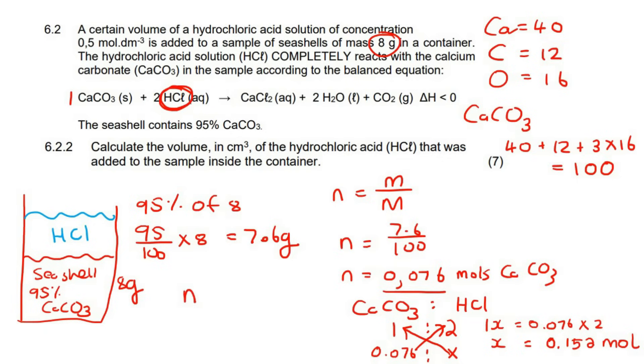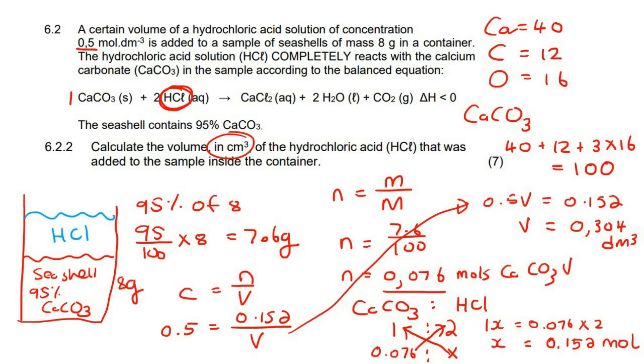Now we can use this formula. C is equal to N over V, because now we have the concentration of the HCl, 0.5, and then the moles of HCl is 0.152, and then the volume is what we're trying to calculate. So just multiply this volume over to the left hand side. You would end up with 0.5 V equals to 0.152. And then if you get the volume by itself, you end up with 0.304. But that's in decimeters. But they want the answer in centimeters, so you multiply by 1000. And so the volume would be 304 centimeter cubed.